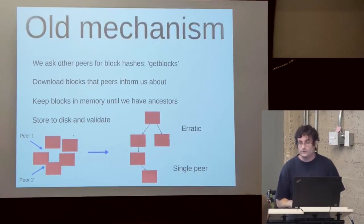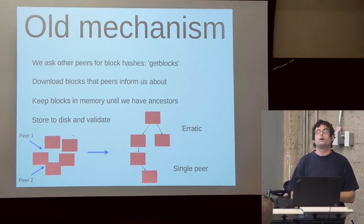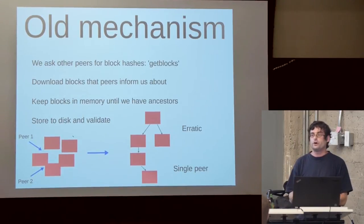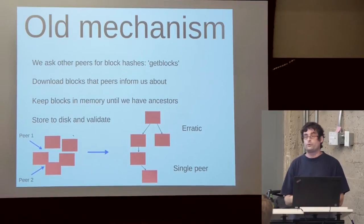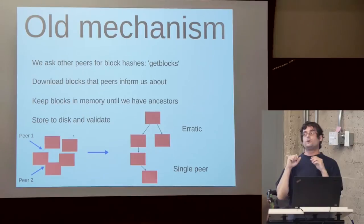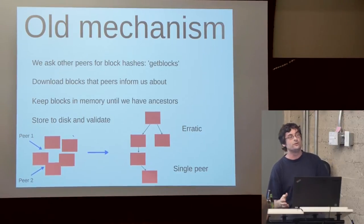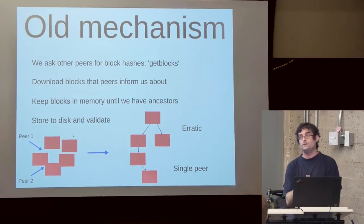Let me start by how we did it before. When a new full node comes online, you ask your peers for the blocks they know about through a message called 'get blocks,' and they reply with a bunch of hashes. These are just hashes — we don't know anything about them. The only thing we can do when a peer informs us about a block is just download it, and we have no idea where it will fit in the chain.